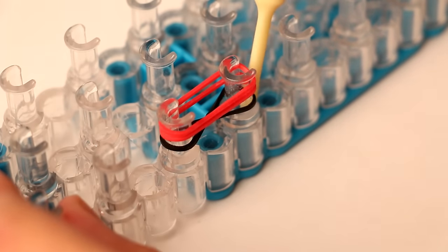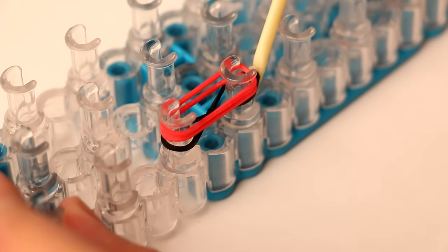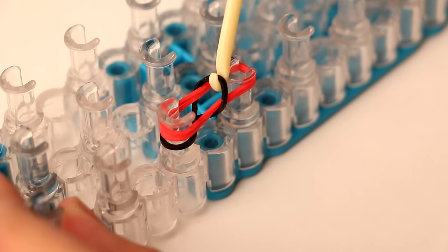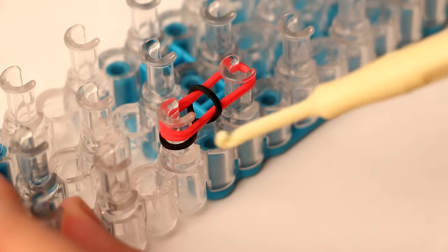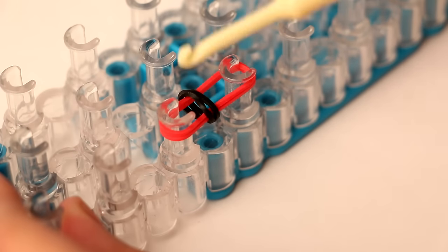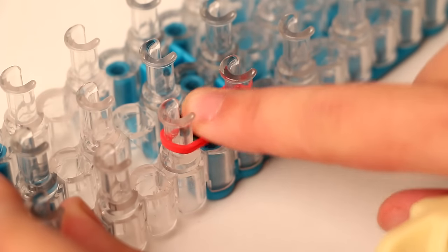Once you have three bands on, what you do is you hook onto the bottom band from the outside and then you hook them over the pin. You do that for the other side as well, like so, and then push it down.